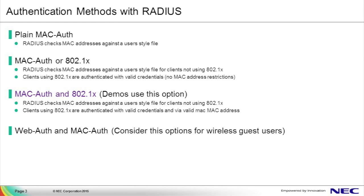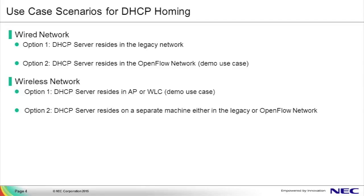Next, we'll talk about DHCP server use cases. In both the wired and wireless network use cases, two options exist for DHCP server homing. In option one for the wired scenario, the DHCP server may reside in the legacy network, meaning it would home to a traditional networking device. In option two, the DHCP server may reside in the OpenFlow network, which is what we'll demo. For the wireless scenario, the DHCP server may be an access point or wireless LAN controller, or it may reside as a separate machine in the OpenFlow network.